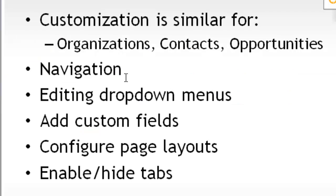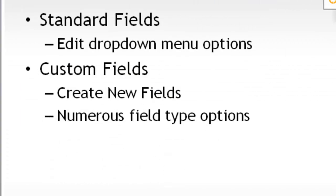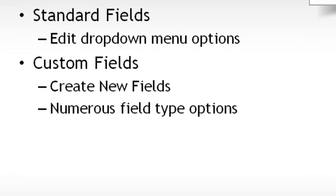We've talked about the navigation. Now we're going to talk about editing the drop-down menus. As we talked about the fields that you can put on the page layout, there are really two types of fields: the standard fields that come with the application, and then there are custom fields. With the standard fields, you're really just limited to being able to edit the drop-down menu options for those fields. With custom fields, there are numerous options.